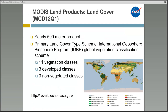The MODIS yearly land cover product incorporates five different classification schemes that describe land cover properties derived from observations spanning a year. The primary classification scheme identifies 17 classes defined by the International Geosphere-Biosphere Program, which includes 11 natural vegetation classes, 3 developed land classes, and 3 non-vegetated land classes. The data have a spatial resolution of 500 meters and can be downloaded from the EOSDIS Reverb website.